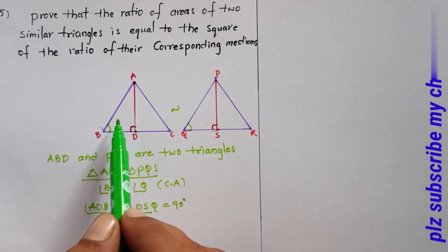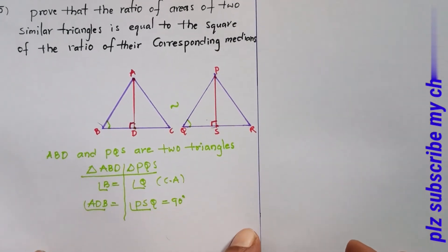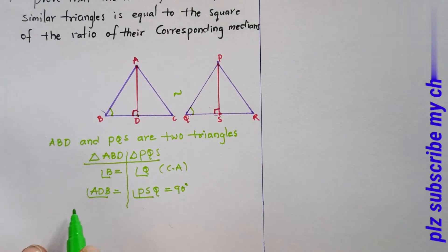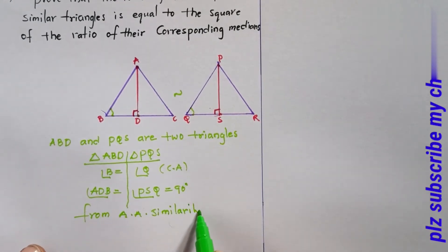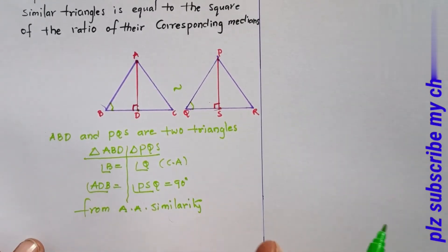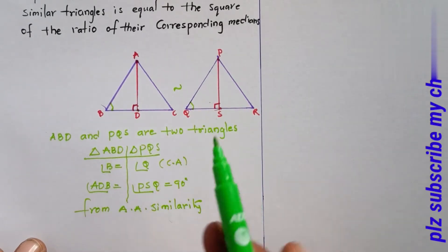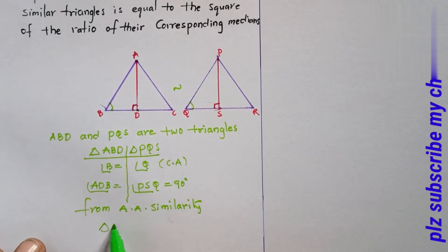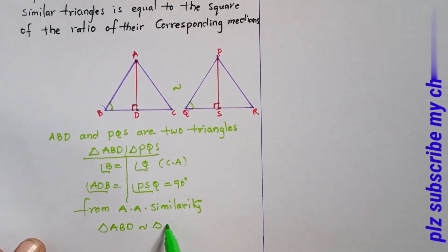The two angles are equal. By angle-angle similarity, triangle ABD is similar to triangle PQS.